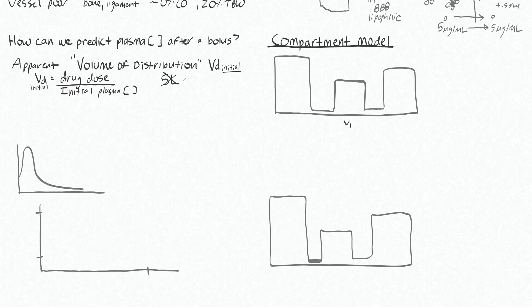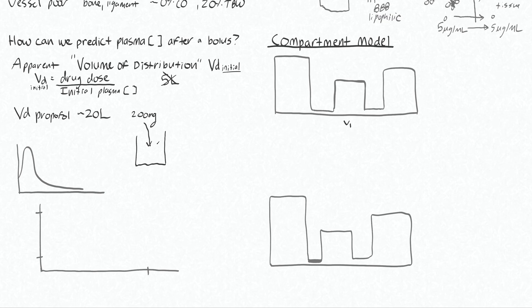In an average person, the Vd initial of propofol is about 20 liters. So if you give a bolus of 200 milligrams of propofol, it appears from the plasma concentration as though it's been dissolved into a bucket containing 20 liters of fluid. 200 milligrams divided by 20 liters equals 10 micrograms per milliliter as your initial plasma concentration, which slightly overshoots the therapeutic range of about 1.5 to 5 micrograms.